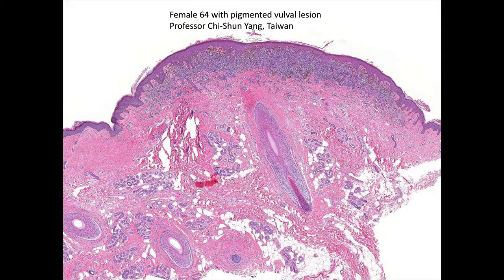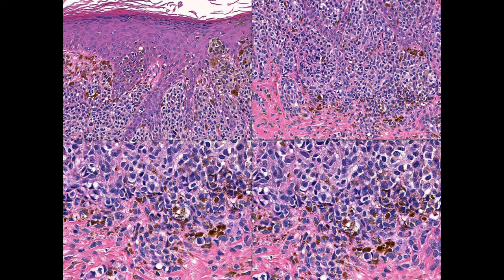And there's a vulval melanoma in a female aged 64. If you remember, melanoma occurs in older patients while atypical genital nevi occur in young patients. This shows an irregular saw-tooth acanthosis, rather like the epidermal changes we see in acral lentiginous melanoma, with a dense infiltrate in the underlying dermis. On close-up, you can see a very atypical population of cells that shows no maturation whatsoever. I hope you can see that this histology is very different from what we've been looking at in atypical genital nevi.